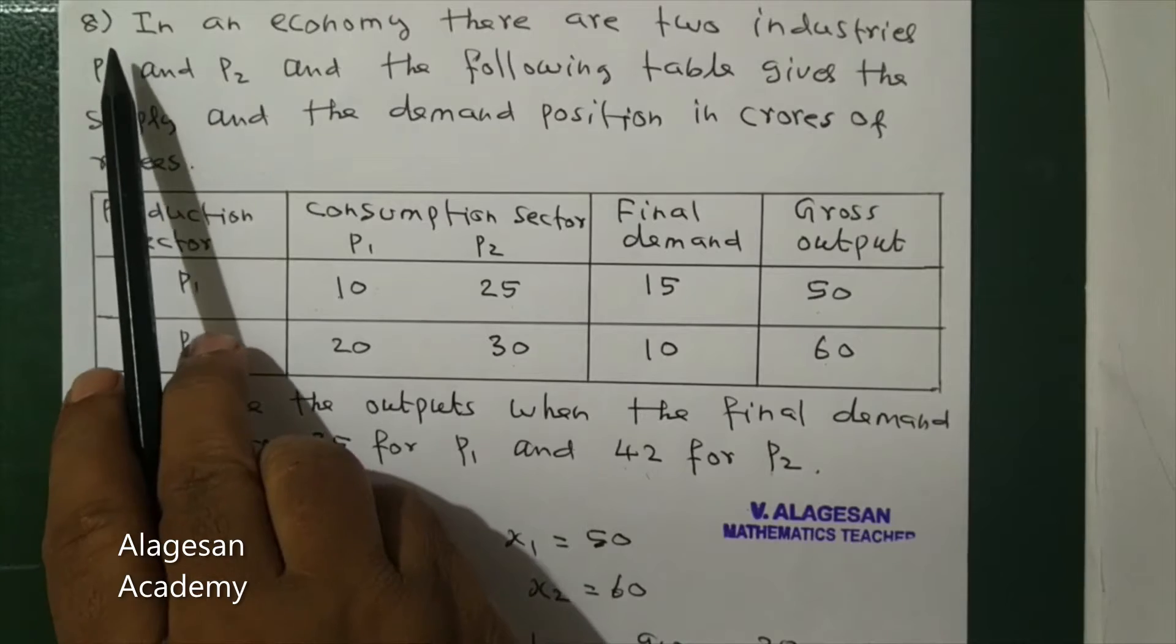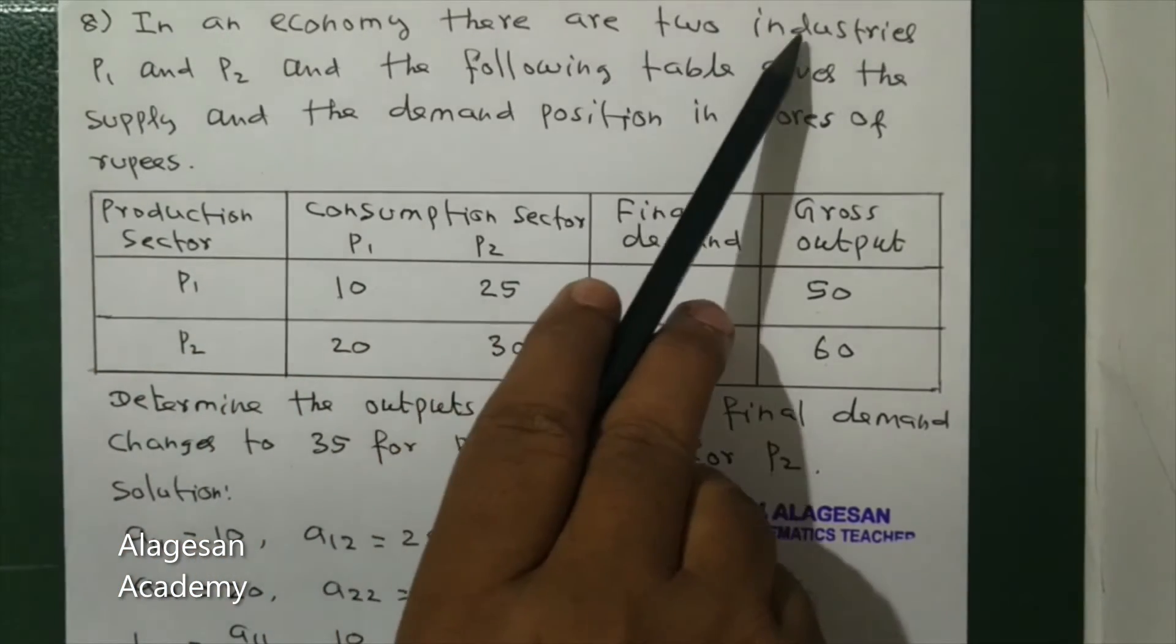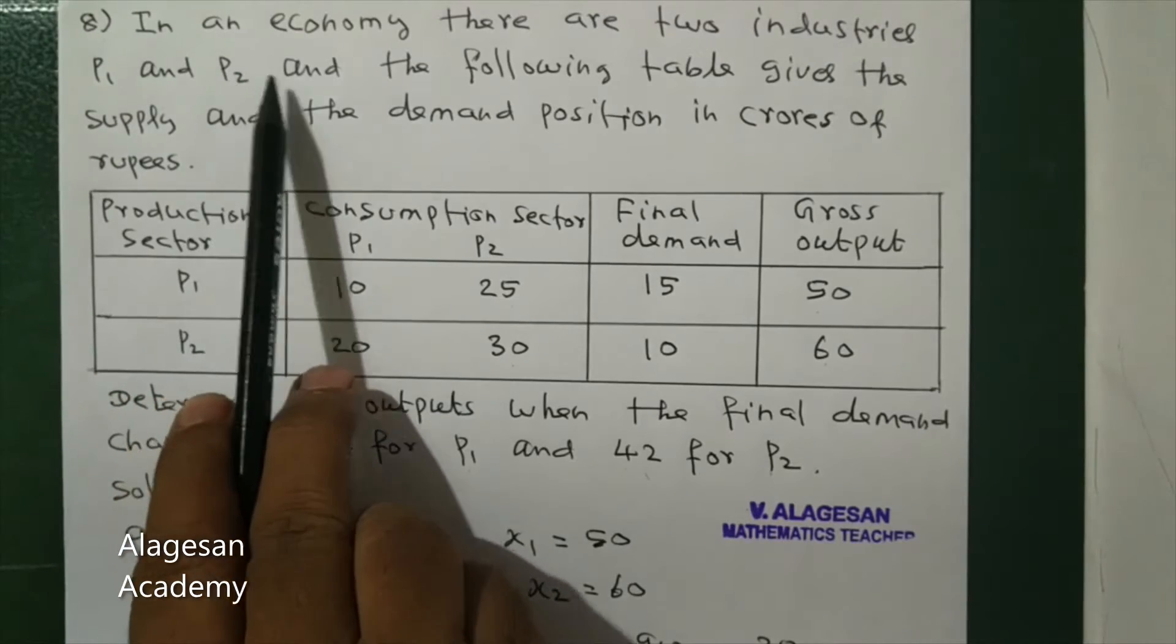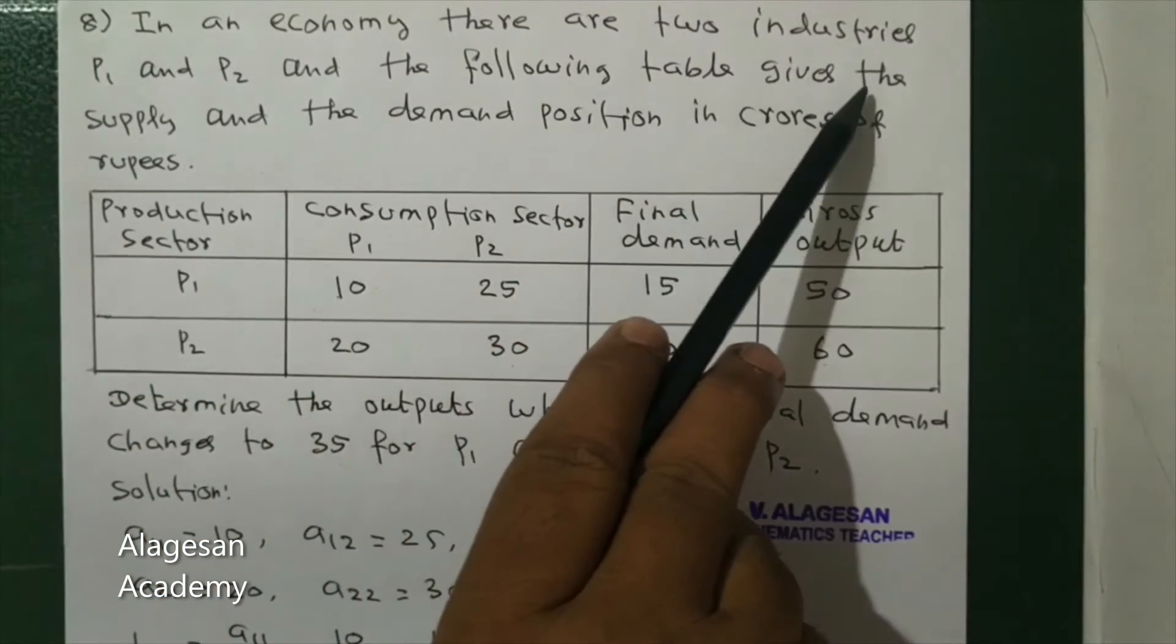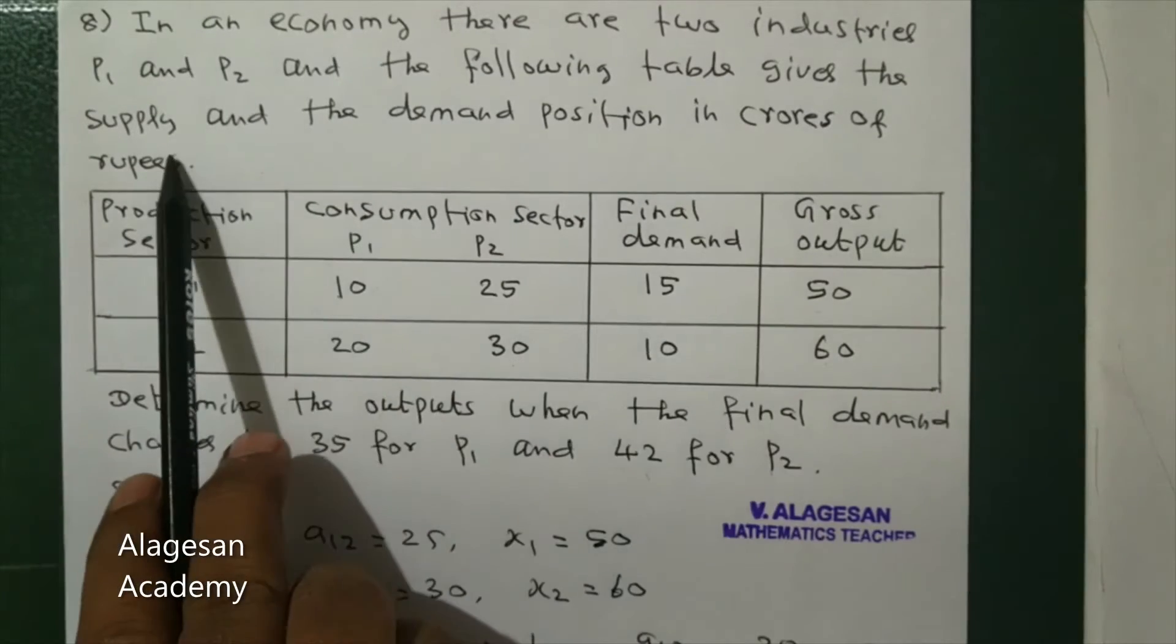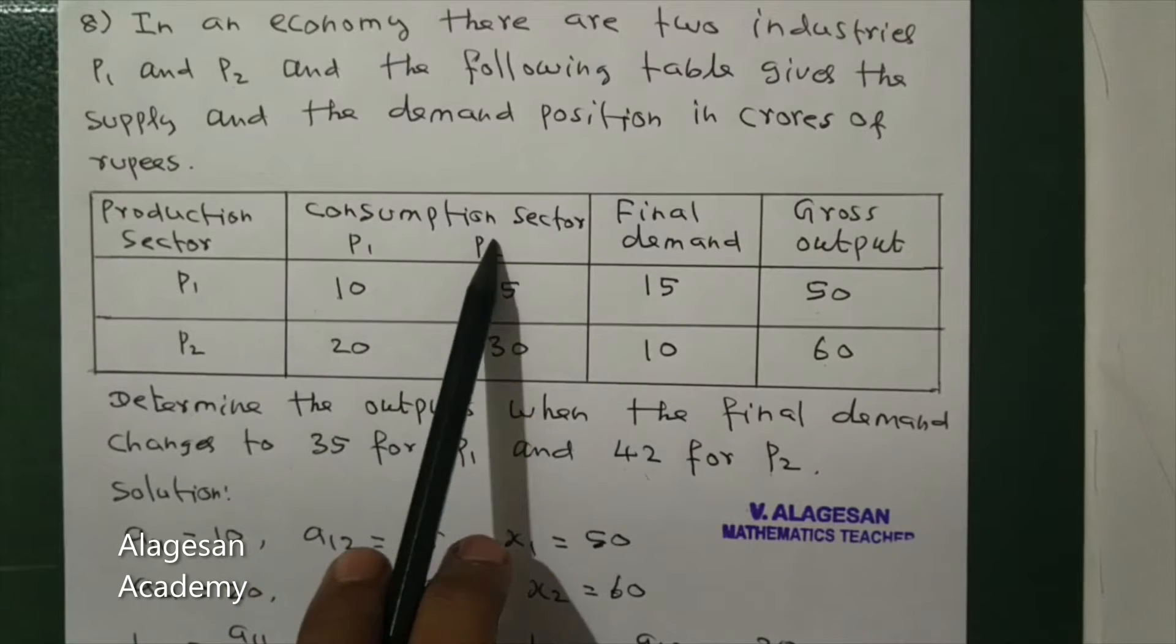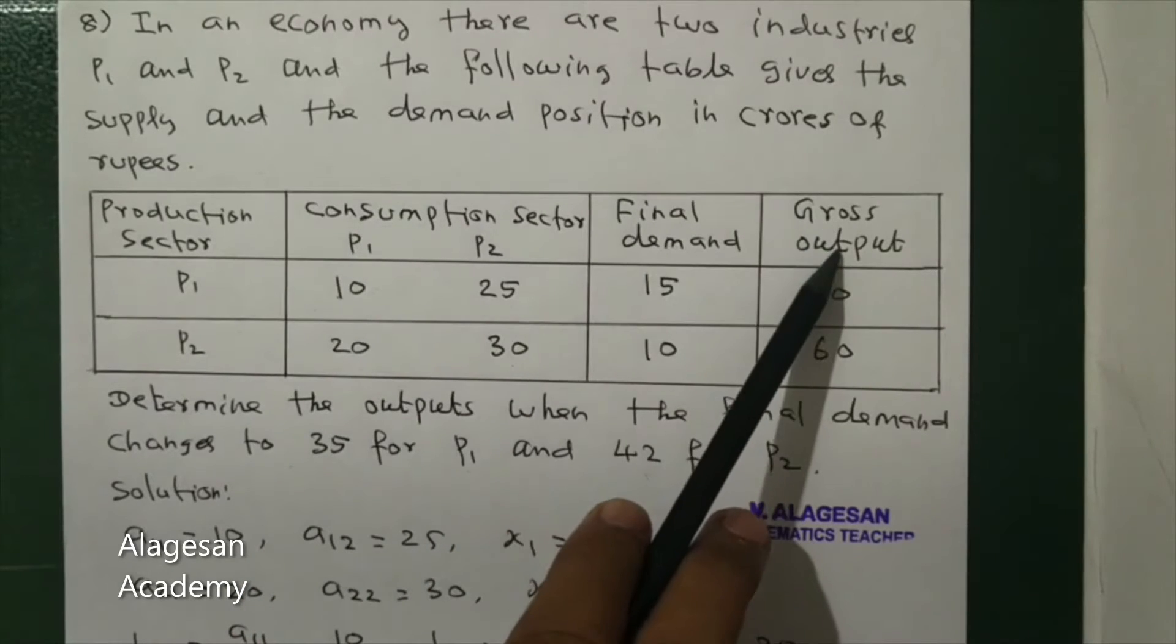Hi students, see question number eight. In an economy there are two industries P1 and P2, and the following table gives the supply and demand position in crores of rupees: production sector P1, P2; consumption sector P1, P2; final demand; and gross output.